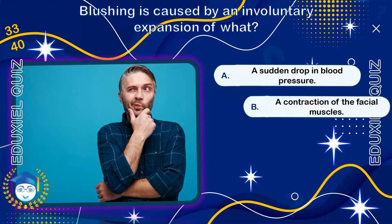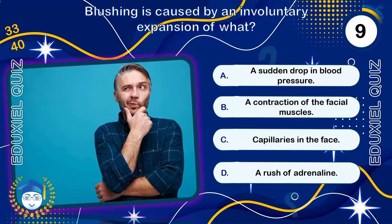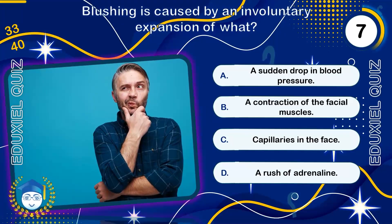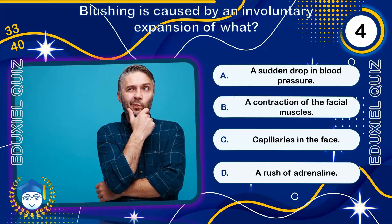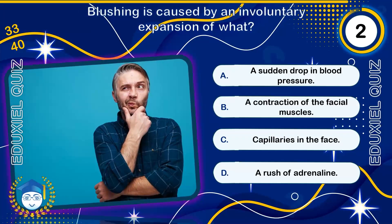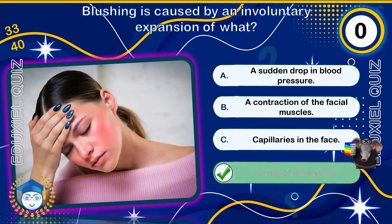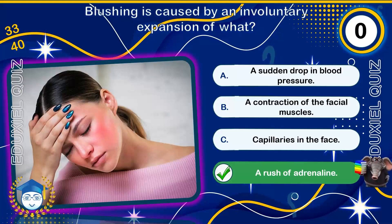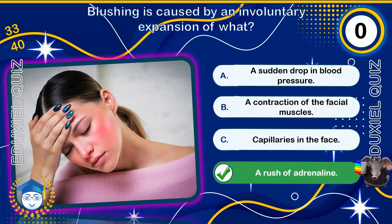Blushing is caused by an involuntary expansion of what? An expansion of the capillaries in the face. This involuntary sympathetic response rapidly dilates the tiny blood vessels in the cheeks and neck, allowing more blood flow and creating a visible flush.